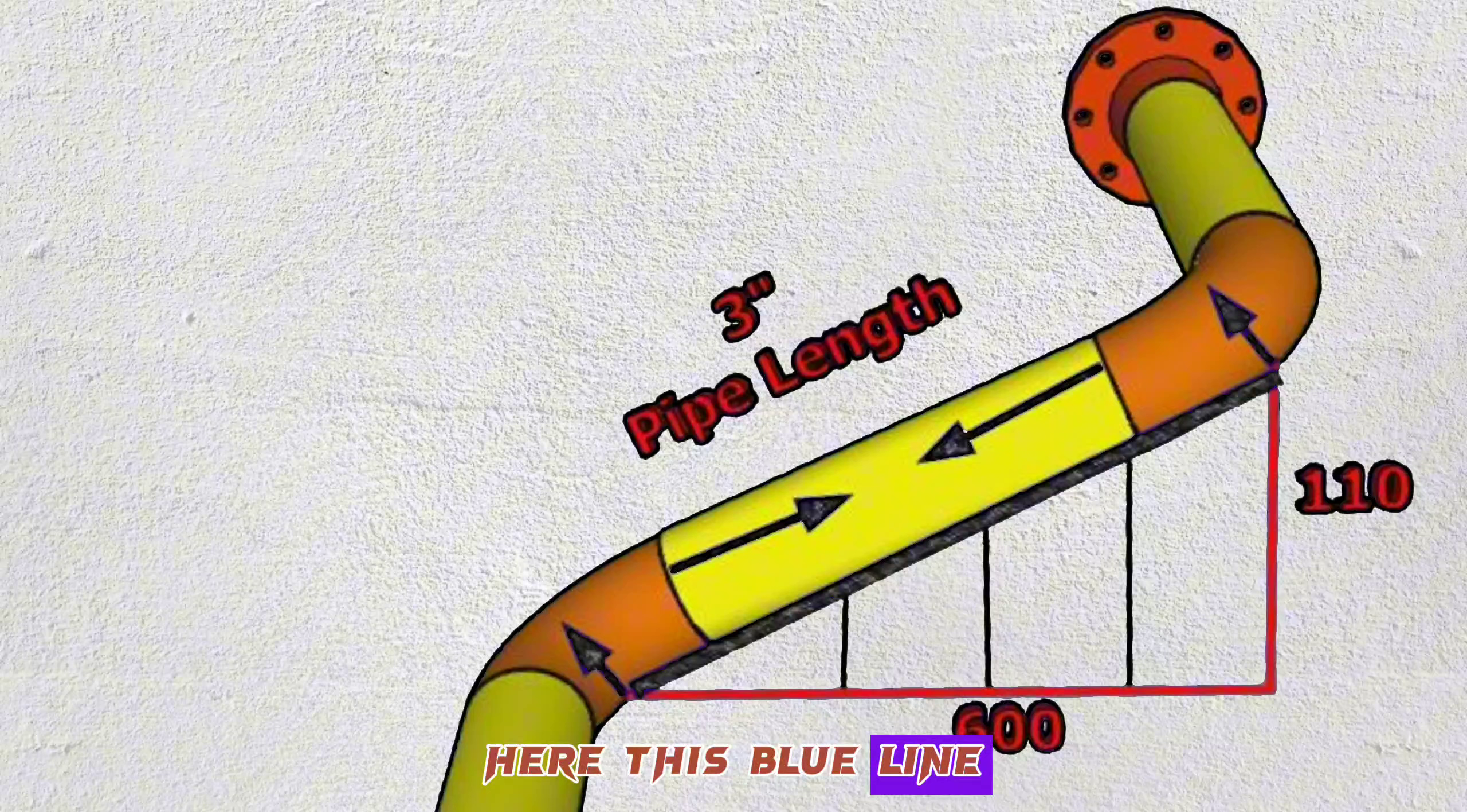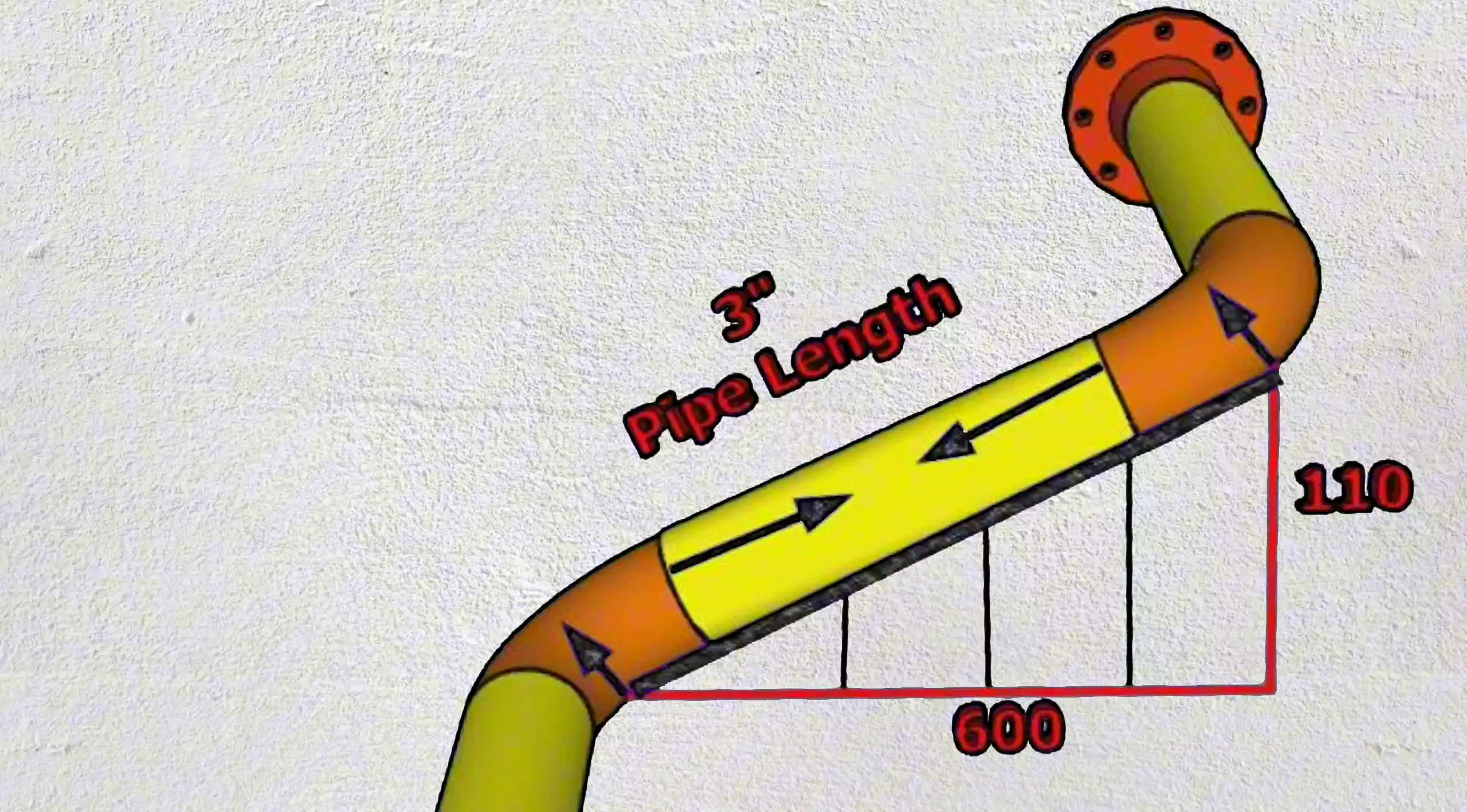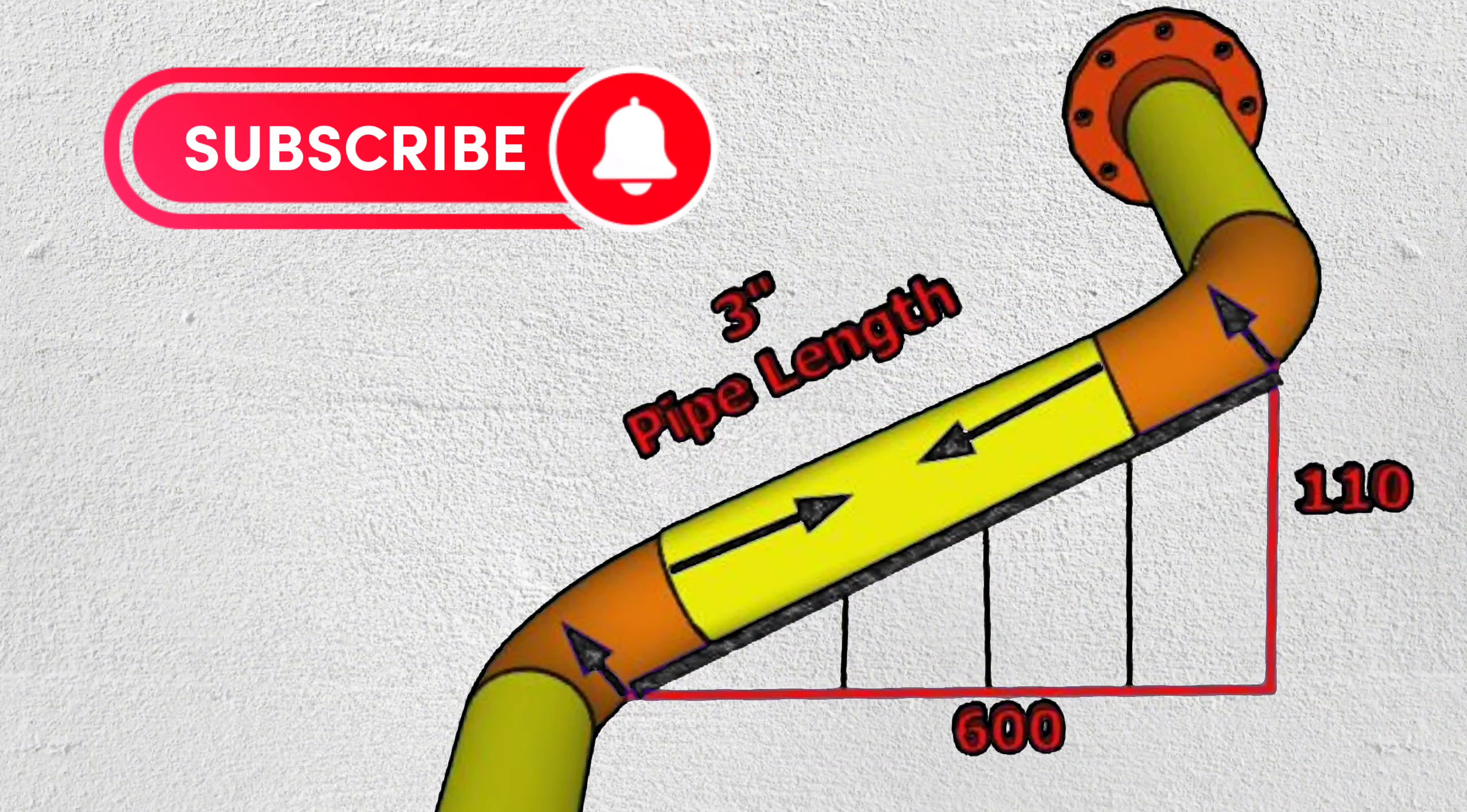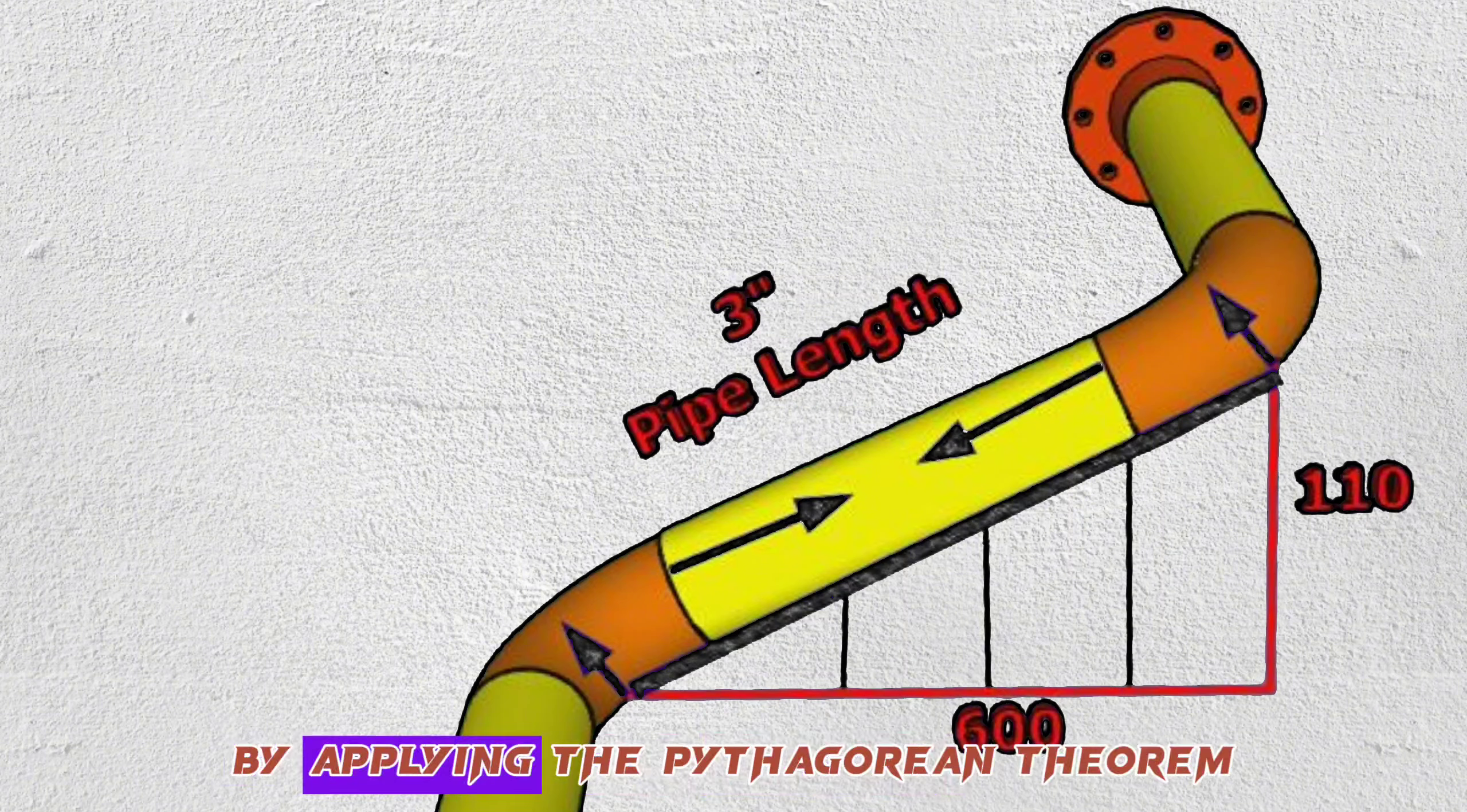Here, this blue line acts as the hypotenuse of a right triangle. We know that the Pythagorean theorem is used to find the hypotenuse in a right triangle. Let's calculate the length of the blue line in this right triangle by applying the Pythagorean theorem.